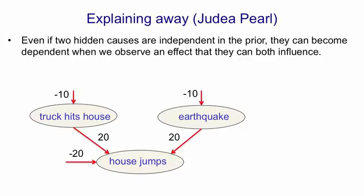But if one of those causes has happened, the 20 cancels the minus 20, and now the house will jump with a probability of a half. Each of the causes is itself rather unlikely, but not nearly as unlikely as a house spontaneously jumping.